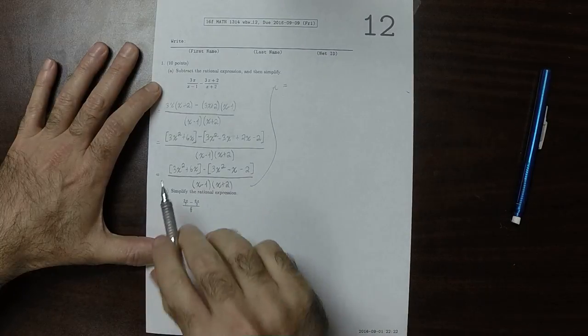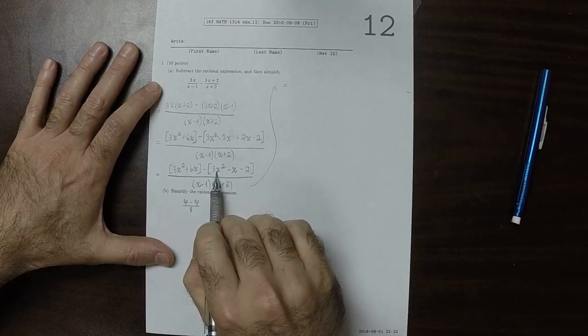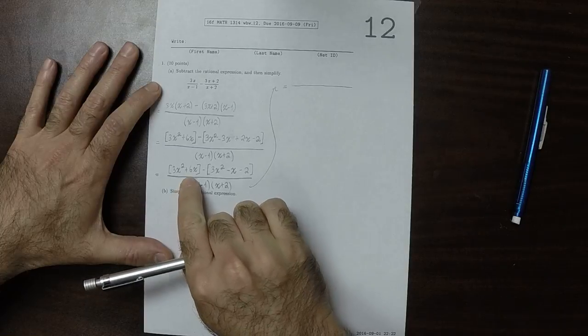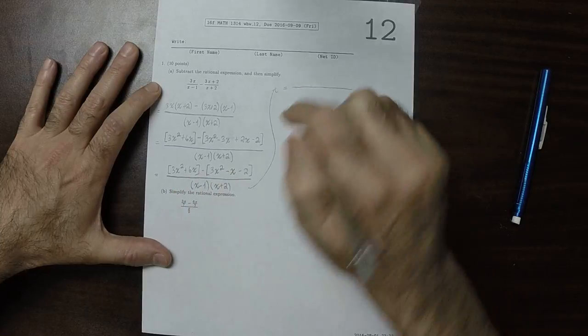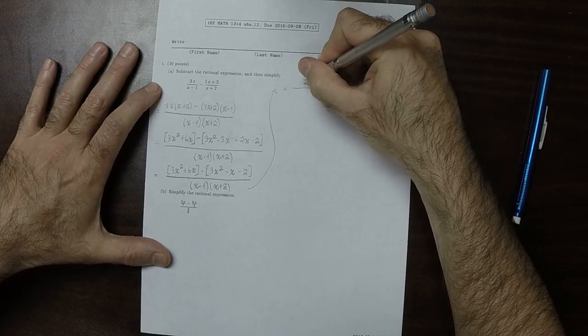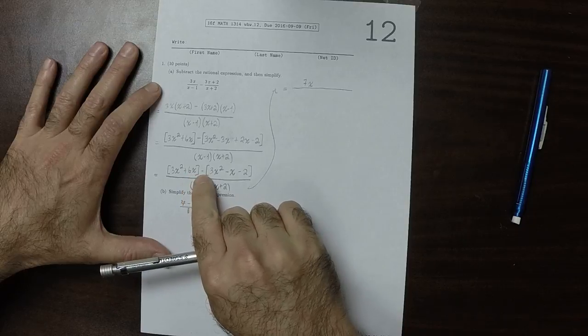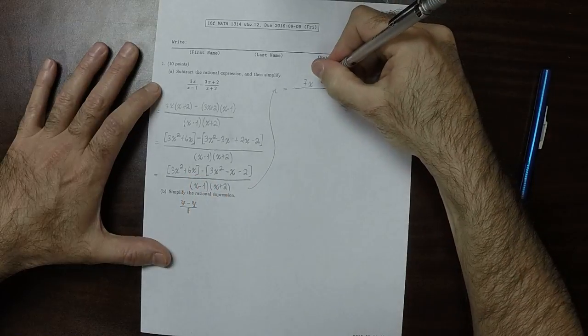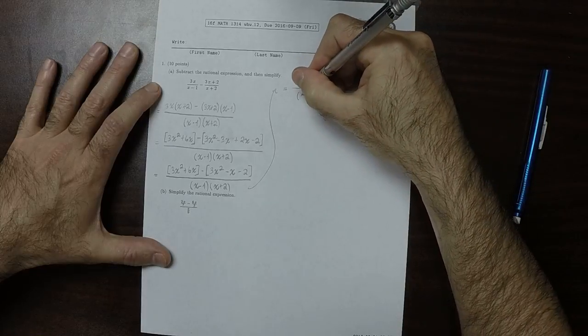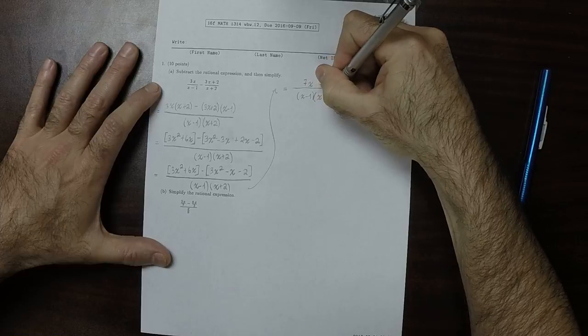Now I'll perform the subtraction. That would be 3x squared minus 3x squared, so the x squareds cancel in the numerator. Then we have 6x minus negative x, so that's 6x plus x, which is 7x. And then minus negative 2, so then plus 2, over x minus 1 times x plus 2.